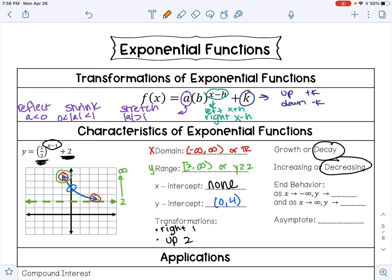For our end behavior, as x approaches negative infinity, this is telling you to look at the left side of the graph. The left side of my graph is going up, and the right side of my graph is on my asymptote.